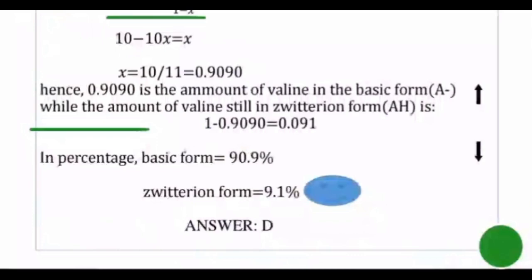Solving 10 = x / (1 − x) gives x = 0.9090. This value of x represents the fraction of valine in the basic form (A⁻). The fraction still in the zwitterion form is therefore 1 − x = 1 − 0.9090 = 0.091.